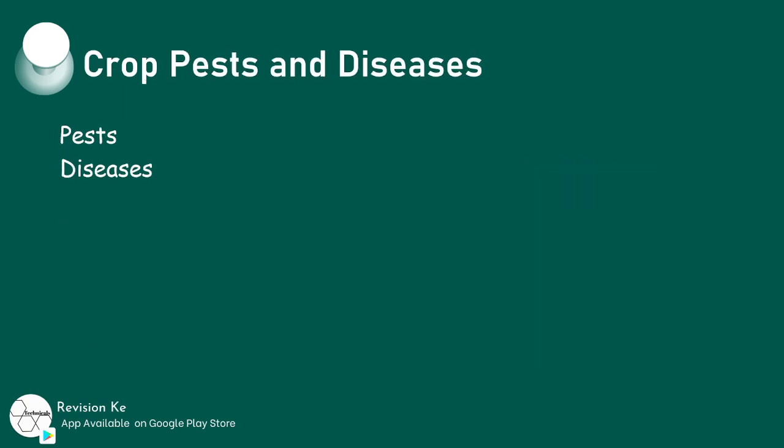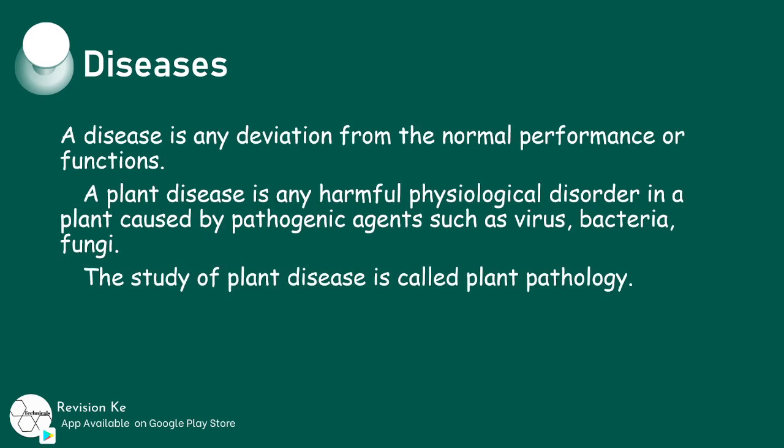Having defined that, we're going to state the main causes of crop diseases and describe the harmful effects of crop pests and diseases. A disease is any deviation from the normal performance or function. A plant disease is any harmful physiological disorder in a plant caused by pathogenic agents such as virus, bacteria, and fungi. The study of plant disease is called plant pathology.